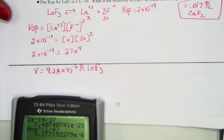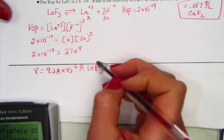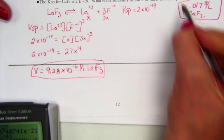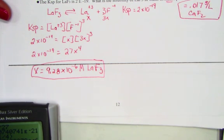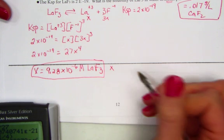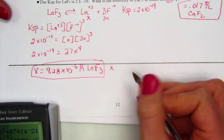It wanted it in moles per liter, and that's what molarity is, so there's the value that we needed. If it had asked for grams, it did not. But if it did, just the next step would be to multiply by its molar mass, and that would convert it into grams per liter.